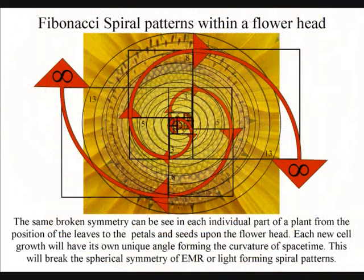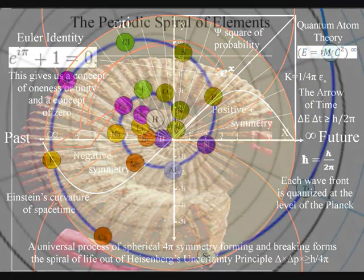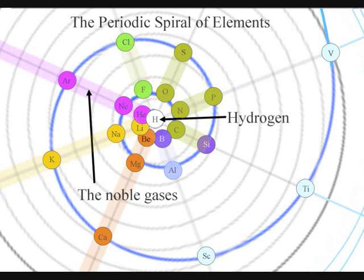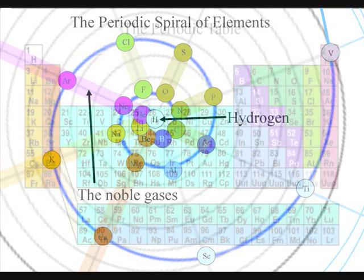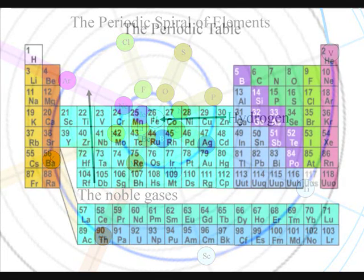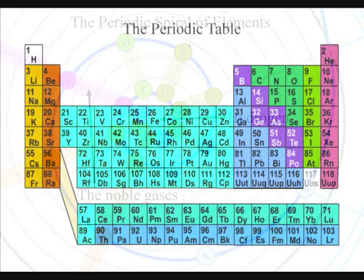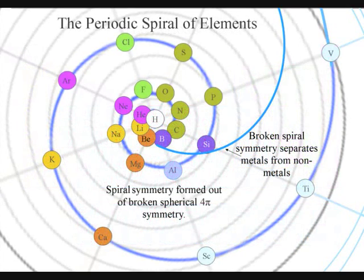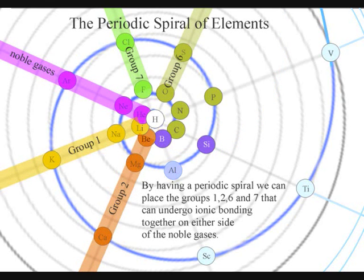This forms a universal process of spherical symmetry forming and breaking that forms the spiral patterns we see in our everyday life, with each element of the periodic table having a set position forming the curvature of these spirals, with hydrogen at the centre and the noble gases and different groups of elements radiating out like spokes from the centre of a wheel. In the traditional periodic table, there is a problem of where to place hydrogen and helium. They can be placed on the left-hand side because of their electron configuration, or they can be placed on the right-hand side. But by placing hydrogen in the centre of a spiral, we solve this problem. Also, by having a periodic spiral, we place the groups of elements that can undergo ionic bonding together on either side of the noble gases.